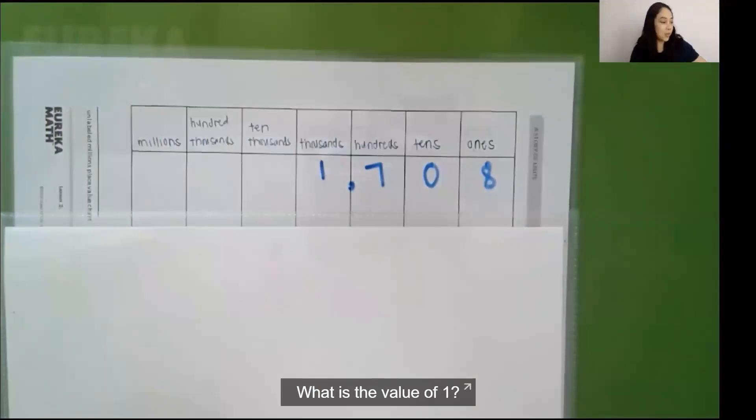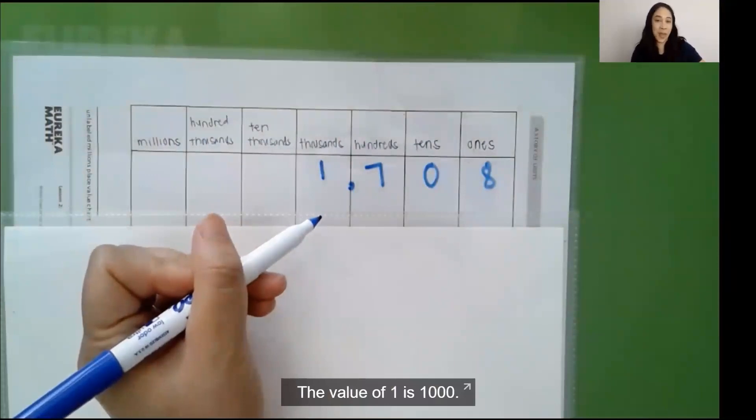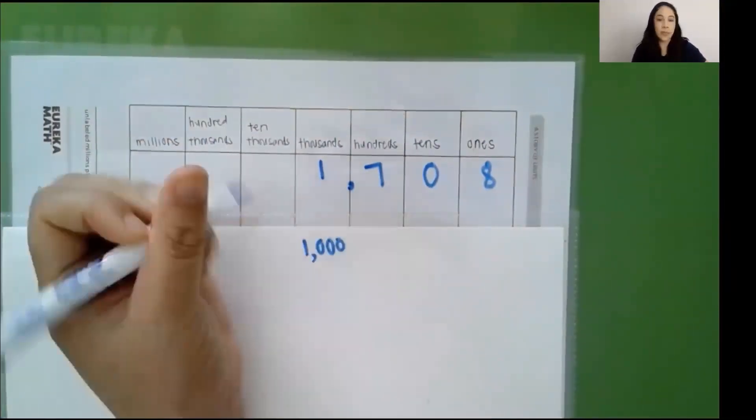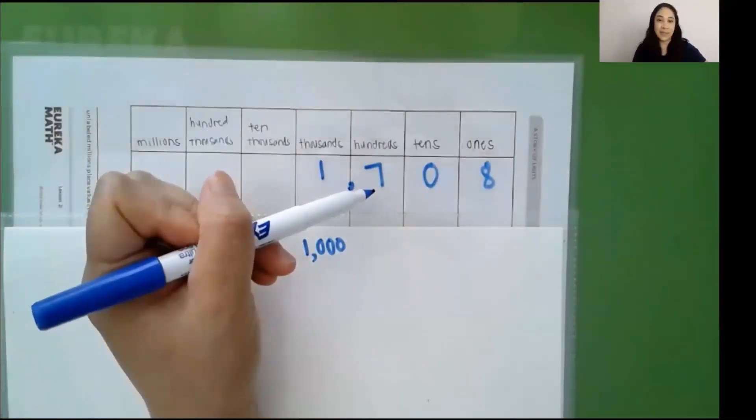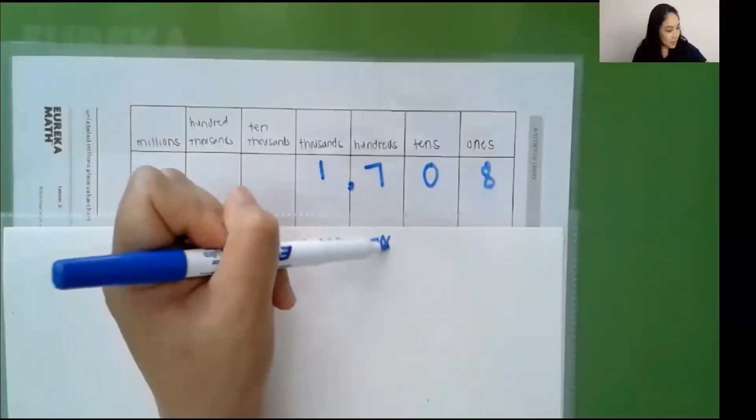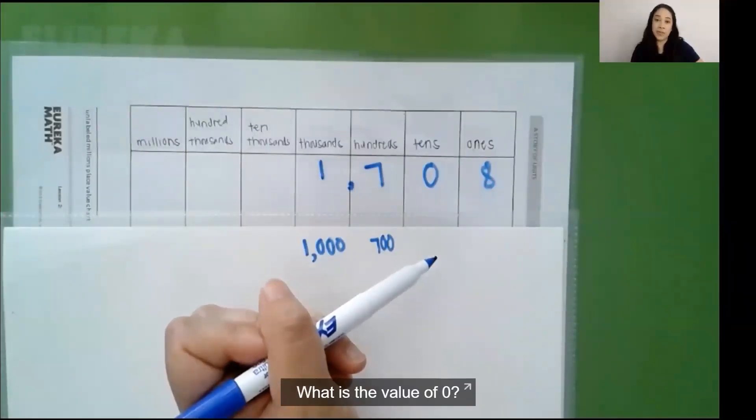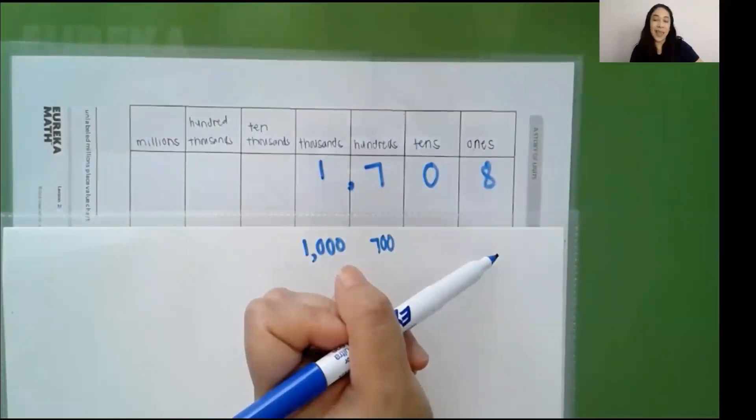What is the value of 1? The value of 1 is 1,000. What is the value of 7? 700. What is the value of 0? 0 tens. What is the value of 8? 8 ones.